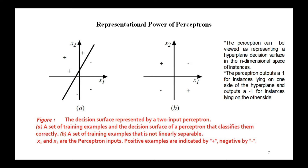The equation for this decision hyperplane is w-vector dot x-vector equals 0. Some sets of positive and negative examples can be separated by a hyperplane — those that can be separated are known as linearly separable sets of examples.